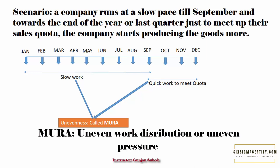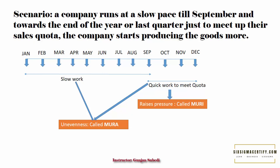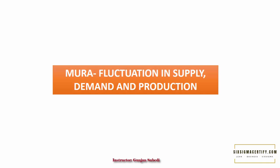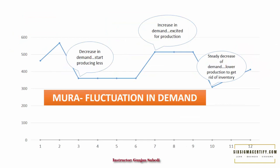So here, towards the end of the year, the pressure in production — or Muri — is built up, which in turn increases the pressure on the finances and sales department as well. Mura simply means fluctuation or unevenness in supply, demand, or production.